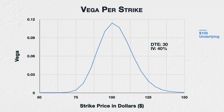The underlying price is $100, and as you can see this is where vega is greatest. This means that the at-the-money options with a strike price of $100 will gain the most value if implied volatility increases by 1%, and will lose the most value if implied volatility decreases by 1%. The $100 strike options have more vega than both the $90 and $110 strike options. If we move further away from the underlying price, this trend continues — the $80 strike options have less vega than the $90 strike options, and the $120 strike options have less vega than the $110 strike options.